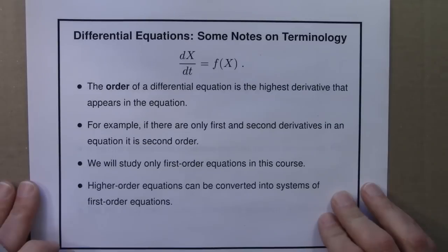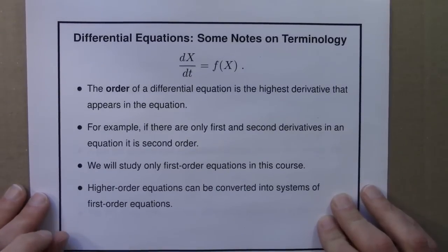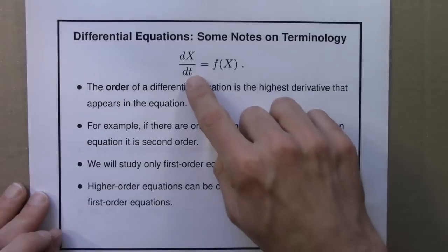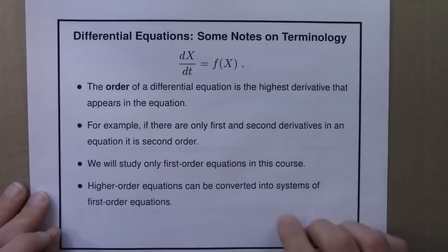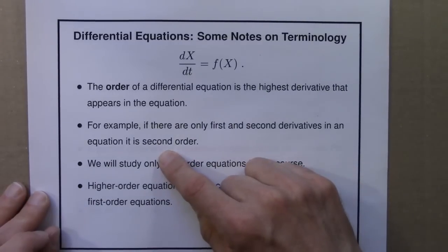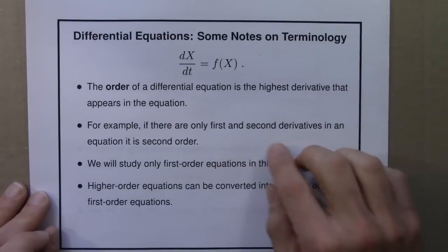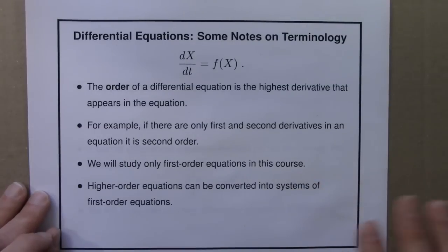Another key term about differential equations is the idea of the order of a differential equation. The order of a differential equation is just the highest derivative that appears in the equation. Here, this is just the first derivative of x, and so we would say that this is first order. If there were first and second derivatives around, then we would say it's second order. The second derivative is not important for this course, but as you might guess, it's the derivative of the derivative, the rate of change of the rate of change. In this course, we'll study only first order equations.